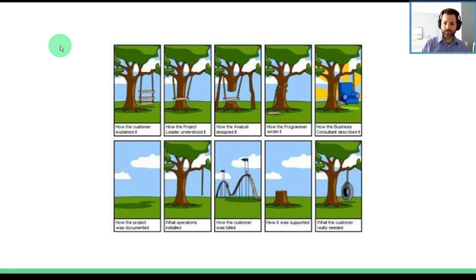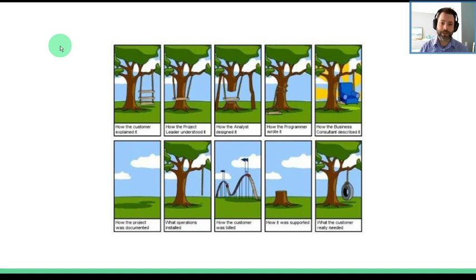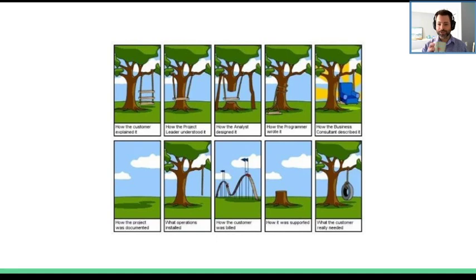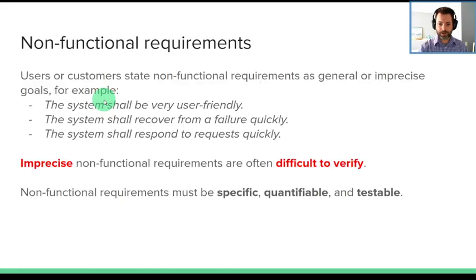Have you seen this picture? It's absolutely delightful — everybody had it on their cubicles. It's the classic software engineering swing picture: 'What the customer wanted,' 'what the business consultant described,' 'what the project leader understood,' 'here's your documentation,' 'what we made,' 'what the customer paid for,' 'all they needed.' It's a cheeky but very accurate metaphor for what really happens in project engineering.